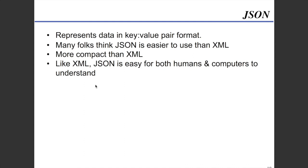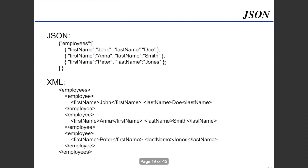JSON is a little bit different. It also is a way to transmit data across the web. It represents data in a key-value pair format. Many folks think that JSON is easier to use than XML — it's more compact, since XML files can get fairly large fairly quickly. Like XML, JSON is easy for both humans and computers to understand. Personally, JSON does seem a little bit cleaner.